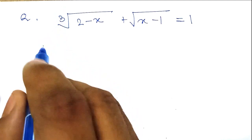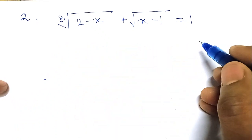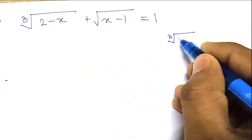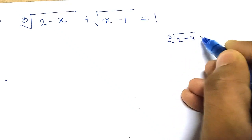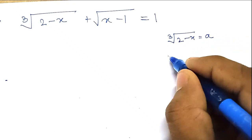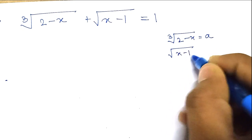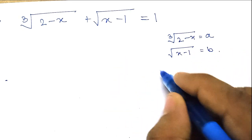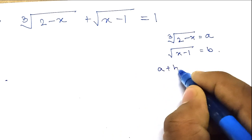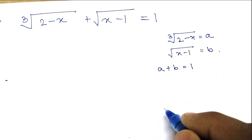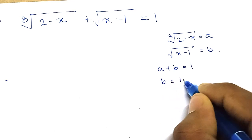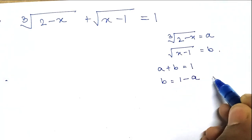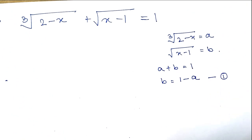First of all, we will consider cube root of (2 minus x) is equal to a, and square root of (x minus 1) is equal to b. So what we get is a plus b is equal to 1, or b is equal to 1 minus a. This is equation number 1.